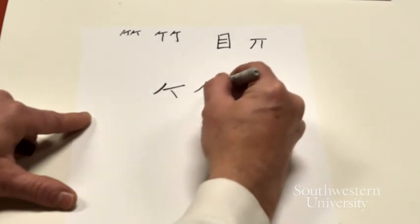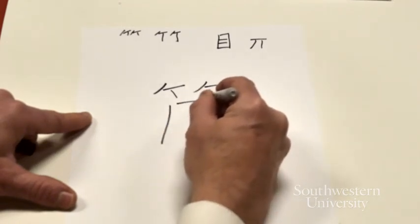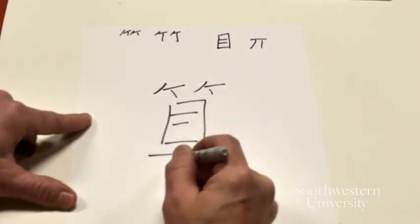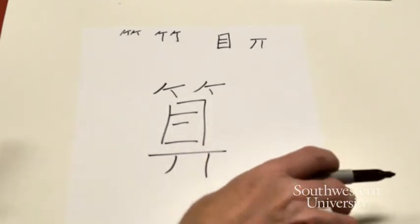Pi, heng, dian, pi, heng, dian, shu, heng, zhe, heng, heng, heng, heng, heng, pie, shu, suan, to count.